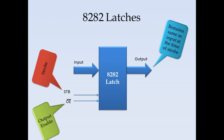This latch will be used to hold the address line of the multiplexed address and data line. The strobe line will be the ALE — Address Latch Enable signal. So this latch will be enabled by the ALE signal.